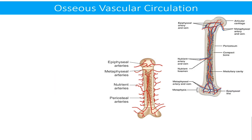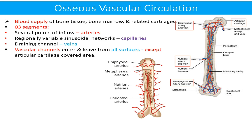Osseous circulation or osseous vascular circulation is the blood supply of the bone tissue, bone marrow, and the related cartilage. It consists of three segments: number one, several points of inflow in the shape of arteries; number two, regionally variable sinusoidal networks in the shape of capillaries; and number three, draining channels — the veins.